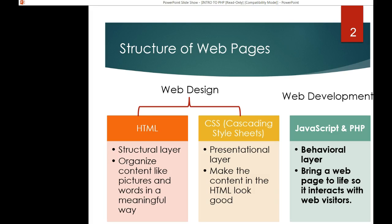HTML is a structural layer language — it organizes content so you see pictures and words in a meaningful way. CSS is the presentational layer which makes the HTML content look good. JavaScript and PHP are working on the behavioral layer — how the page will interact with web visitors.